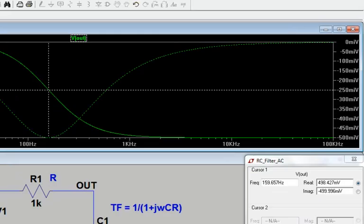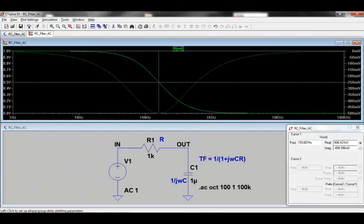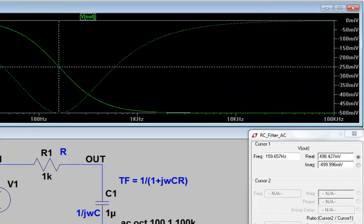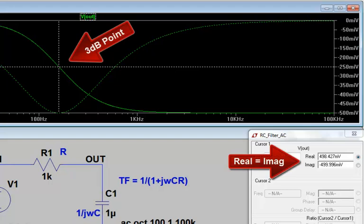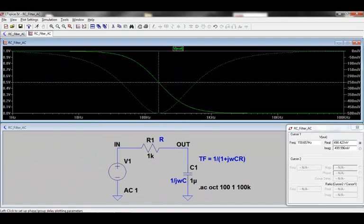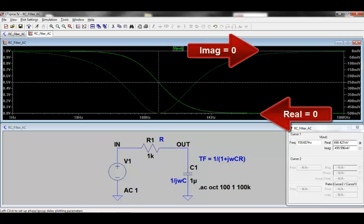We know that for a single pole RC filter, the 3 dB point occurs where the real and imaginary parts of the transfer function are equal in amplitude. Moving the cursor to the 3 dB point, we can see that indeed the real and imaginary parts are equal, and this is shown in the bottom right-hand corner of the screen. Note that we're plotting the transfer function here, not the impedance, so at a high frequency, both real and imaginary terms tend to zero.